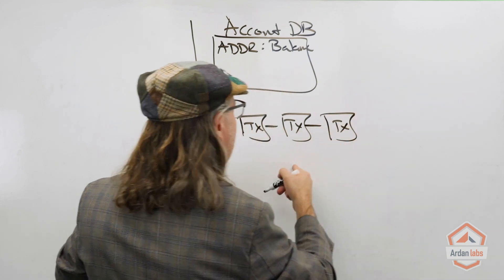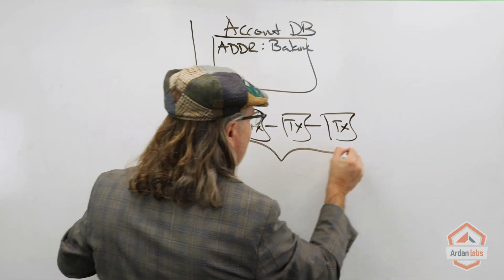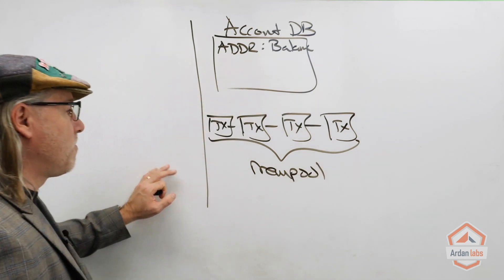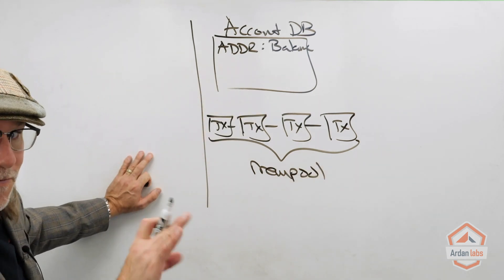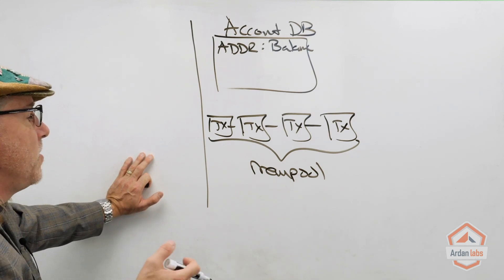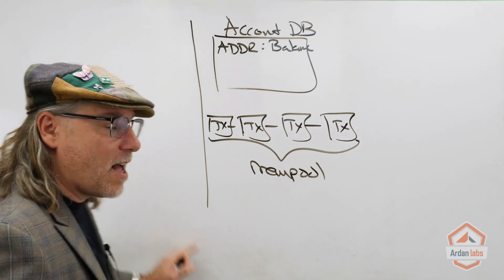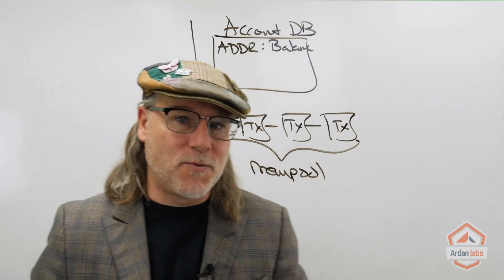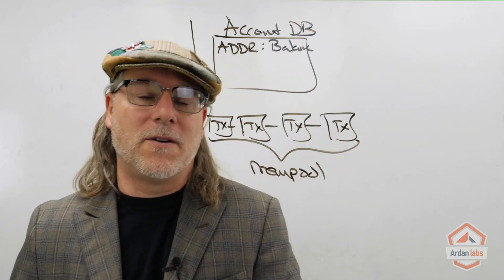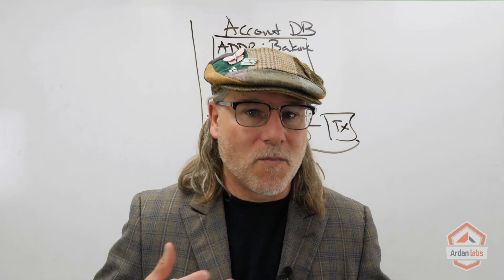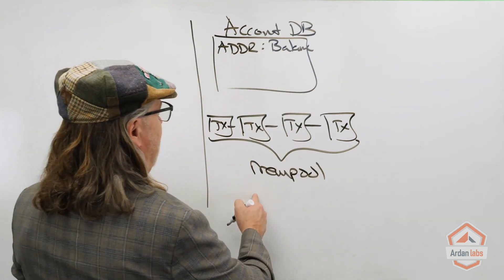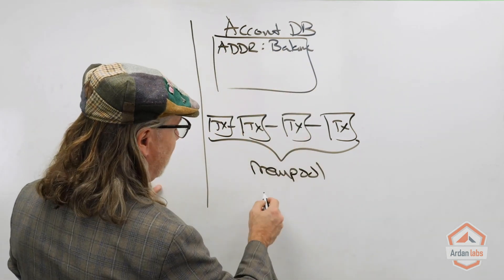Those transactions are going into the memory pool — the mempool. We're still far away from implementing this, but we'll get there. Eventually our consensus algorithm is going to kick in, whether it's proof of work or proof of authority.